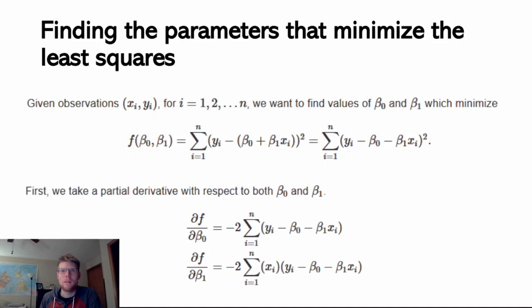If I think about the sum of squares residuals in terms of a function, it's a function with beta 0 and beta 1 as parameters. It's going to be represented by each of my y values subtracted by my best estimate — the point on the line at that given x point. I'm going to find the difference between my actual observed value and my predicted value, square that difference, and sum all of these squared differences up.